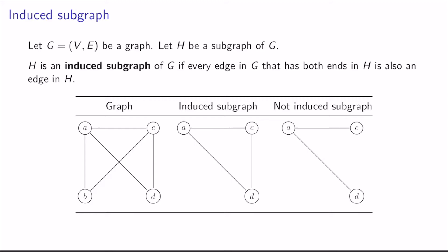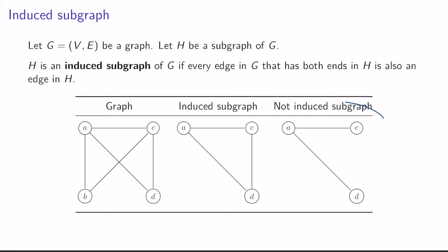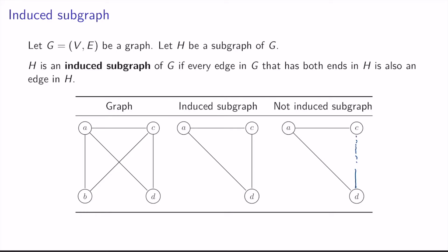Before we look at what a claw-free graph is, we need the notion of an induced subgraph. Let G with node set V and edge set E be a graph, and let H be a subgraph of G. We say H is an induced subgraph of G if every edge in G that has both ends in H is also an edge in H. For example, one subgraph here is induced because any two nodes in the subgraph that are joined in the original graph are also joined in the subgraph. But another graph here is not an induced subgraph, because the nodes C and D have an edge joining them in the original graph, but it's not present in the subgraph.